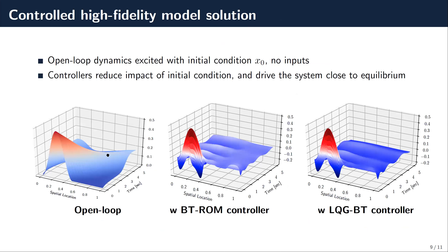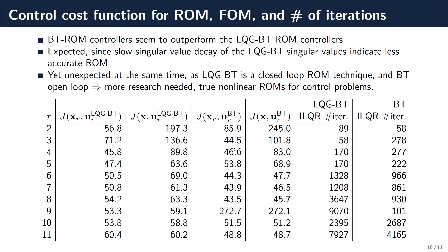Finally, I show the different states. The open-loop state of the full order model shows the initial condition propagating and being convected through the domain. Plugging in the controller from ILQR with balanced truncation and from ILQR with LQG balanced truncation both reasonably stabilize the system and drive the state close to zero. We see that the controller is suboptimal for the high-dimensional model since it was designed for the low-dimensional model, but it performs quite well. In fact, balanced truncation gives a better cost for the high-dimensional model than LQG balanced truncation.